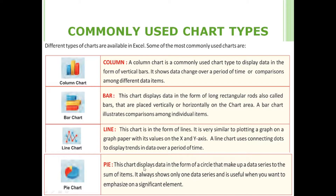The pie chart displays data in the form of a circle representing a data series as proportions of the sum of items. It always shows only one data series and is useful when you want to emphasize a significant element.